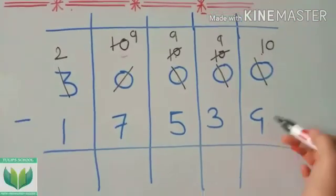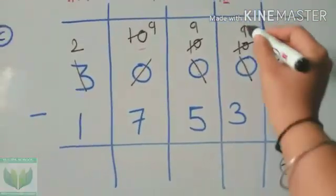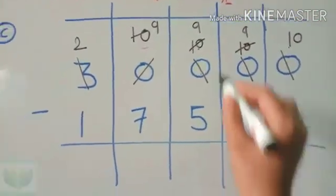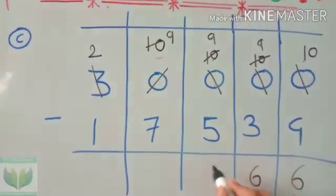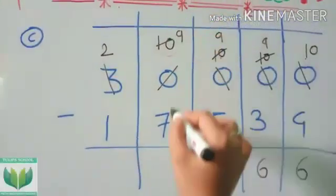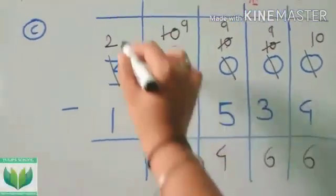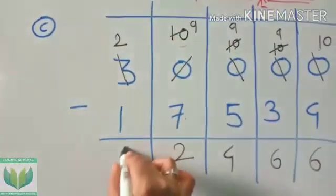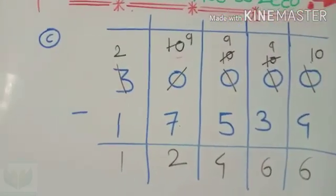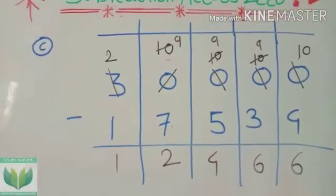Now 10 minus 4 is 6, 9 minus 3 is 6, 9 minus 5 is 4, 9 minus 7 is 2, 2 minus 1 is 1. The answer is 12,466.